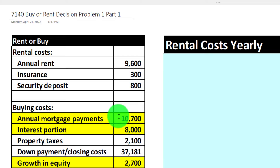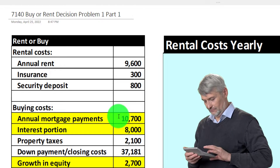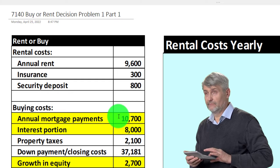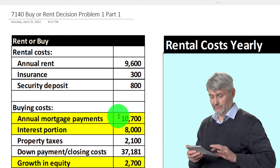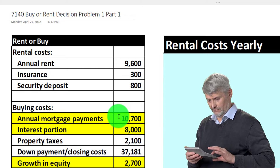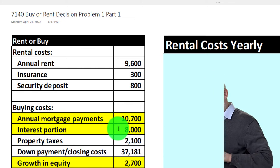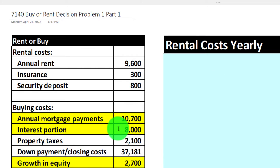We'll need to calculate what the mortgage payments would be based on the home. We're going to assume for starting out that the payments are going to be $10,700. The interest portion is $8,000 — we'll talk more about how to get that number because it will change from year to year. We'll assume to start with that the property taxes are going to be $2,100 per year.